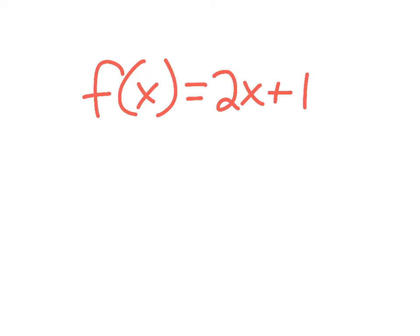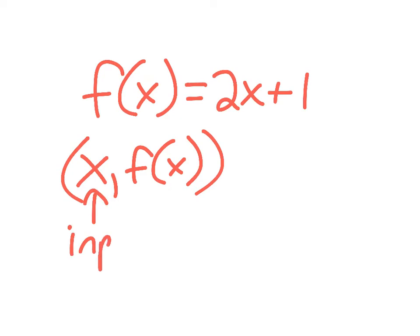If we have f of x equals 2x plus 1, your ordered pairs would be x and f of x, where x is your input and f of x is your output.